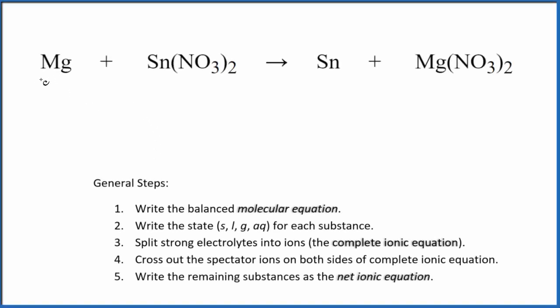Let's balance the net ionic equation for Mg plus Sn(NO3)2. This is magnesium and this is tin(II) nitrate. So the first thing that we need to do when we balance net ionic equations, we have to balance the molecular equation. This is the molecular equation here. It's already balanced, so that's kind of nice.